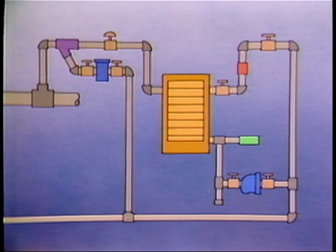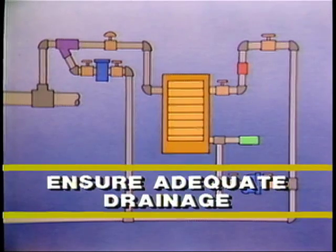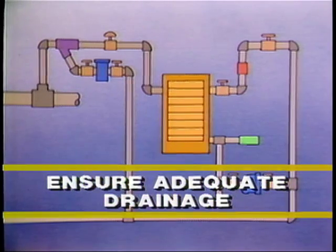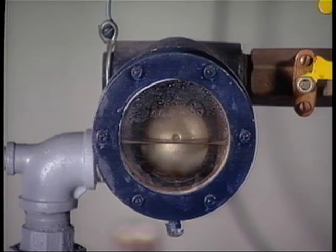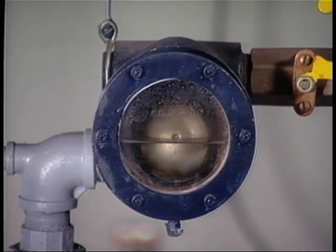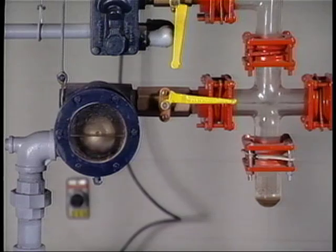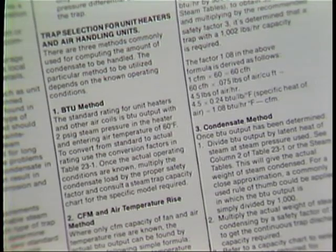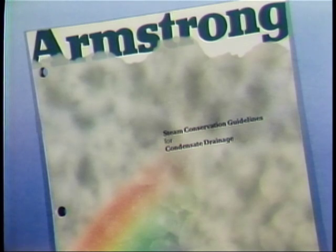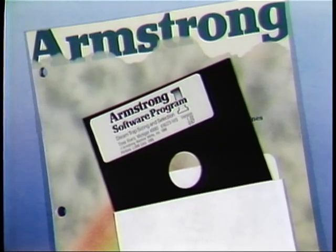The coil should be drained by a steam trap which handles the startup air load and fluctuating condensate levels of a modulating system well. Armstrong recommends float and thermostatic traps in this low-pressure modulating application. The trap should be connected to a drip leg fitted with a dirt pocket. Sizing guidelines for the trap can be found in Armstrong's publication Steam Conservation Guidelines for Condensate Drainage, or in Armstrong Software Program 1: Steam Trap Sizing and Selection.